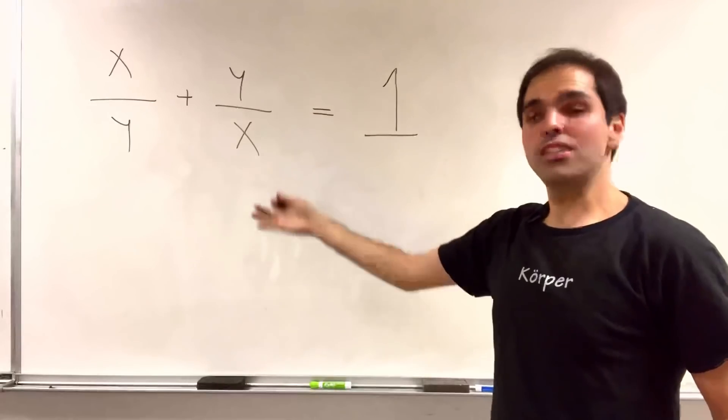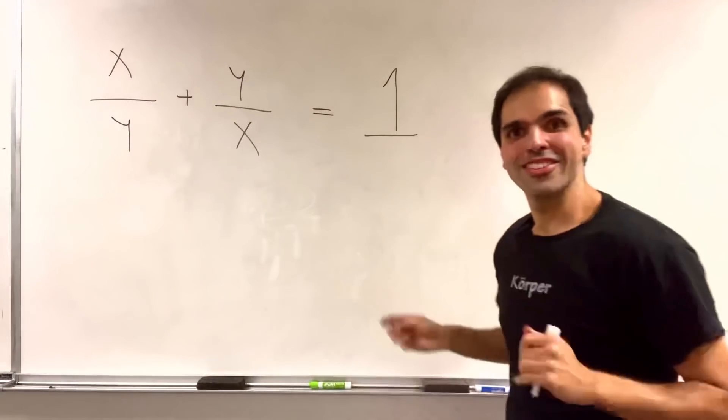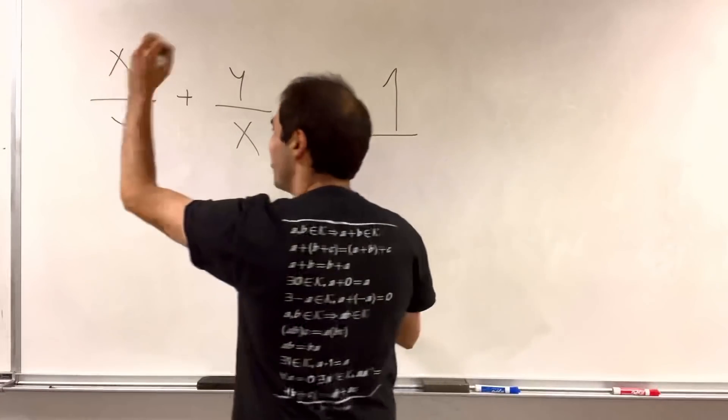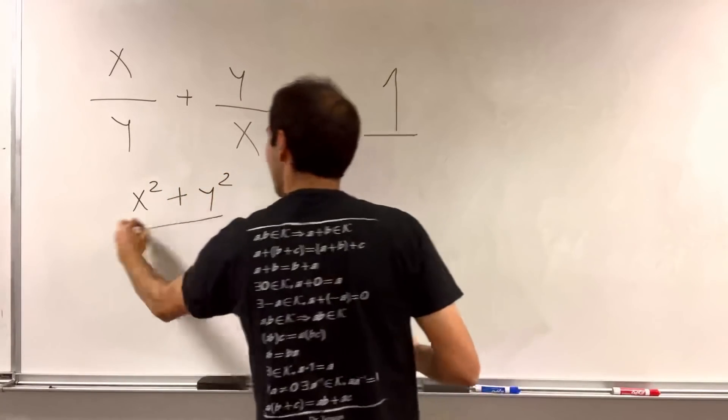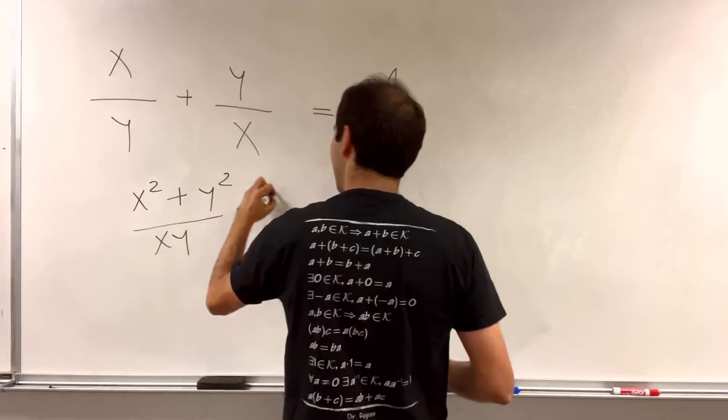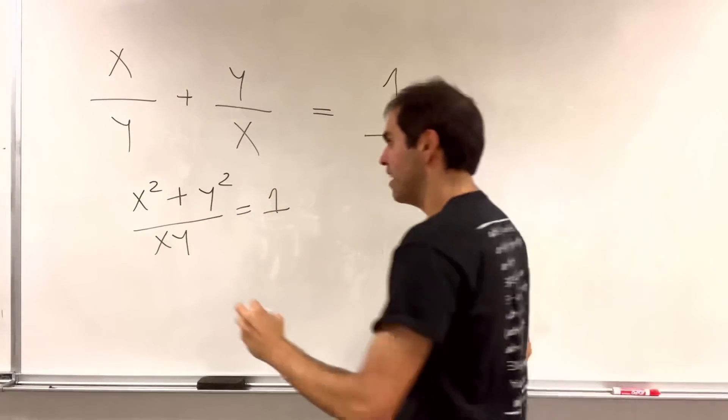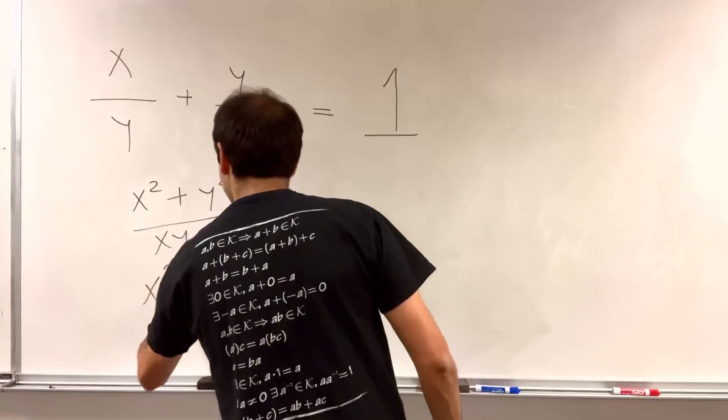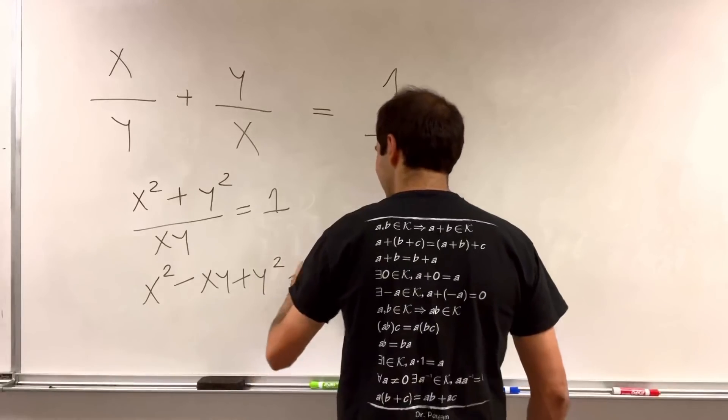So let's put it on a common denominator. x times x, or rather x squared, plus y squared over xy equals 1. Cross-multiplying, you end up getting x squared minus xy plus y squared equals 0.